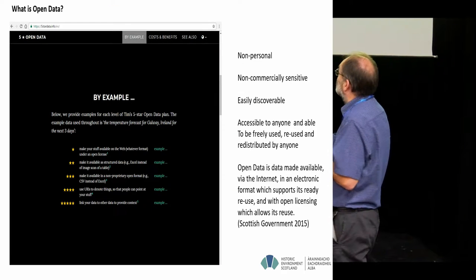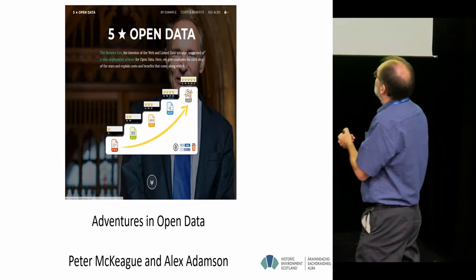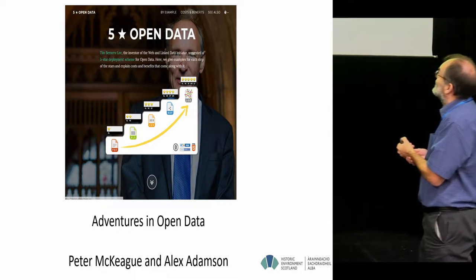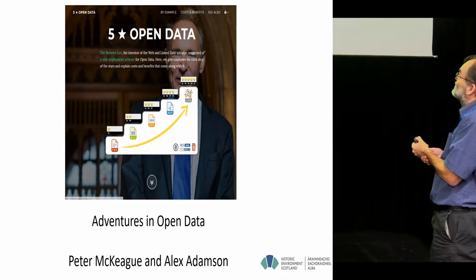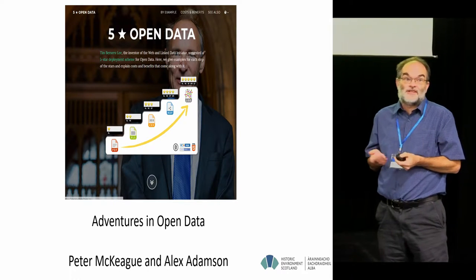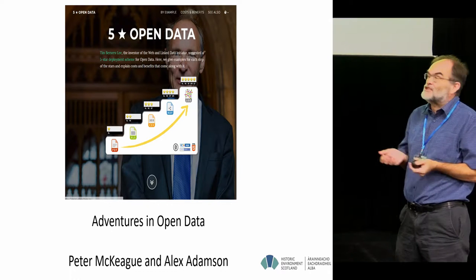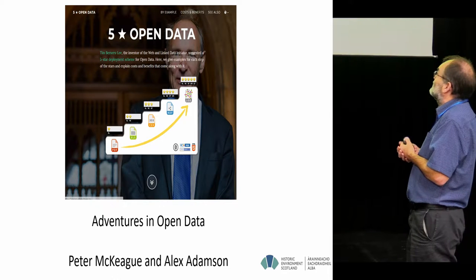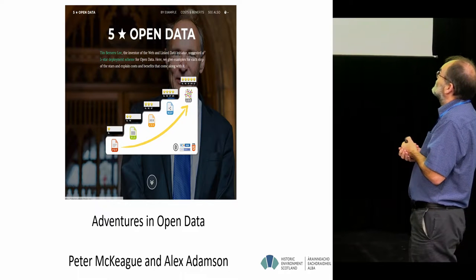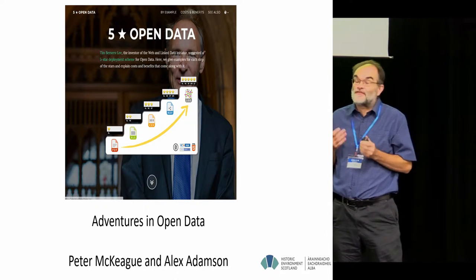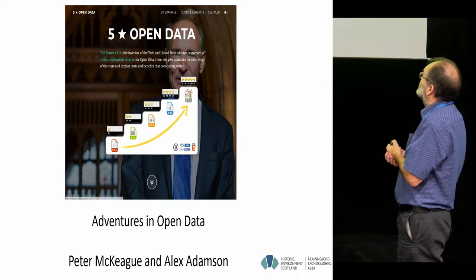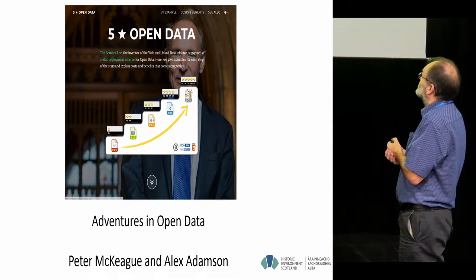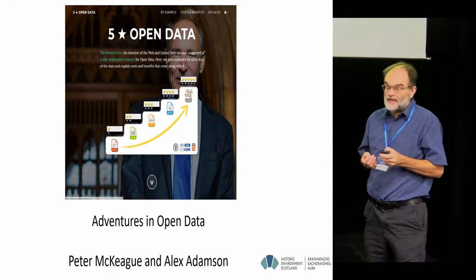So what is open data? Tim Berners-Lee defined it as five-star data. One-star is just making information available in a prior format — PDF — you can read it but can't do very much with it. Two-star is a text format; three-star is XLS in proprietary software like Microsoft Word; and CSV is three-star, which is probably the realistic level we can aim for with most of our data. But we do have some four-star and five-star data — linked data format.